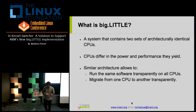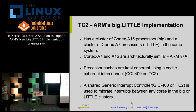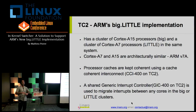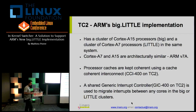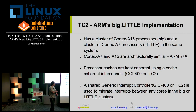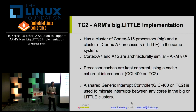The processors are similar in architecture but differ in the performance they yield. The chip we've been working with is the TC2 from ARM. It has a cluster of A15 cores and a cluster of A7 cores — three A7 cores and two A15 cores. Having an odd number of cores in the A7 cluster was intentional, to design a system that catches all the edge cases.